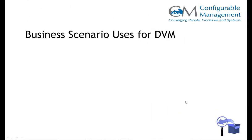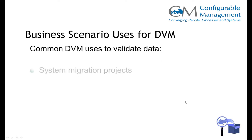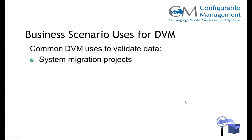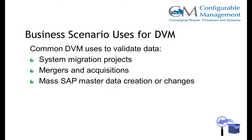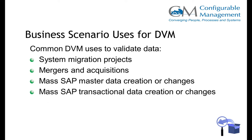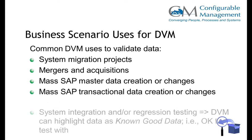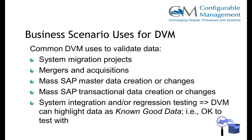Some common scenarios for this: internally you might have a system migration going on from a legacy system to a new SAP system, or you might be doing a merger and acquisition — we use this product a lot in that scenario. Mass changes to master or transactional data saves you from having to manually review the data. And it's also a great product to identify known good data for your testers, so your test team knows what the good data is out there.